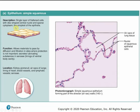Simple squamous tissue is a single layer of flattened, scale-like cells found in places like the capillaries of the kidneys and the air sacs of the lungs. Because they're so thin, they function in diffusion and filtration. For example, in the lungs during gas exchange, oxygen must cross this tissue layer — a thick stratified tissue wouldn't allow oxygen to cross as efficiently.